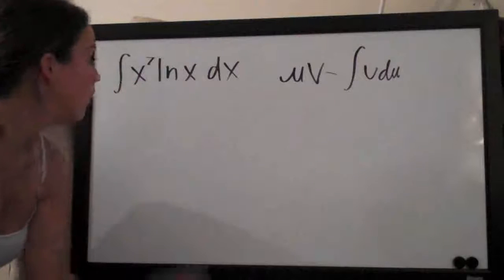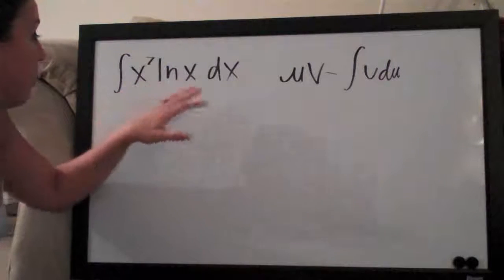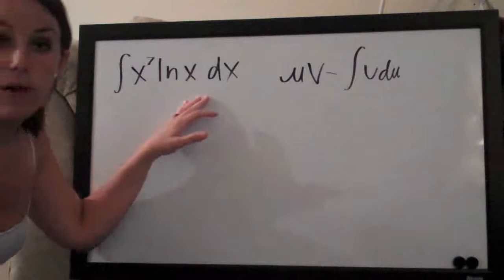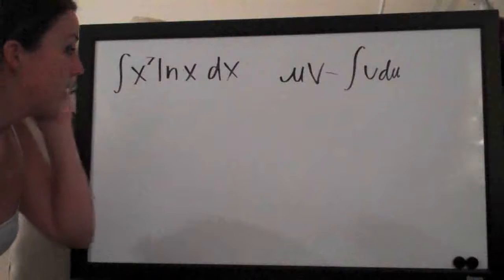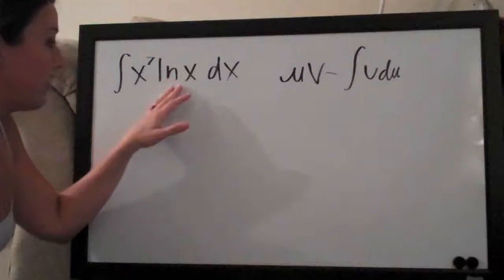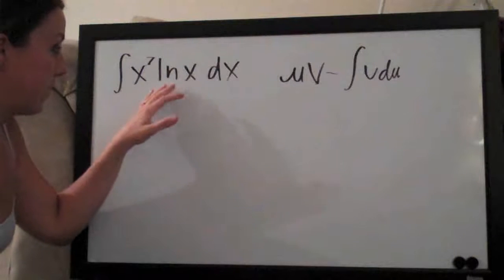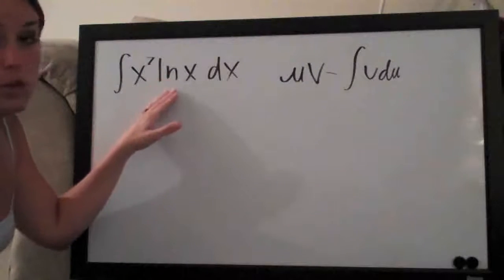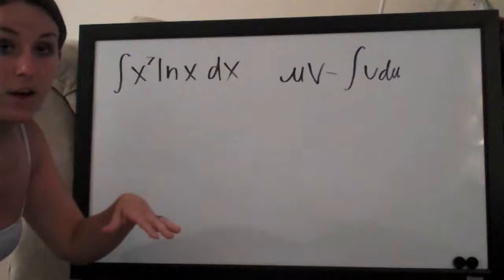The first thing we need to do is pick which one of the components of our integral will be u and which one will be dv. And we always for integration by parts try to pick whichever one for u will simplify itself when we take the derivative.